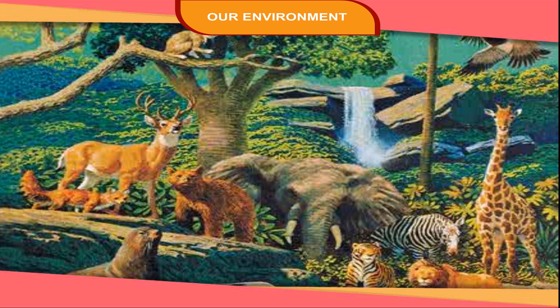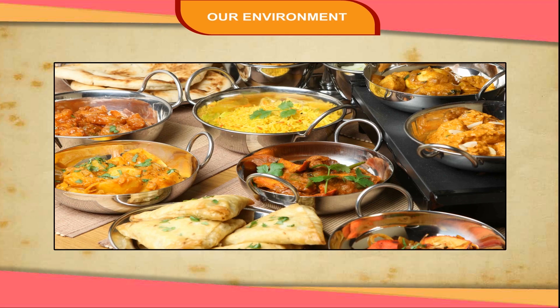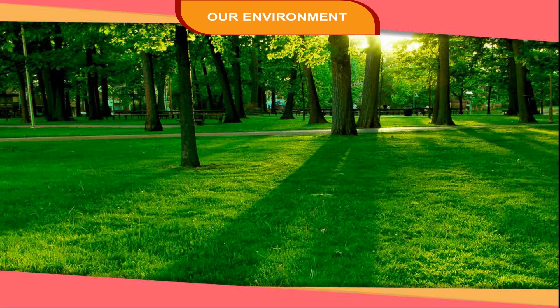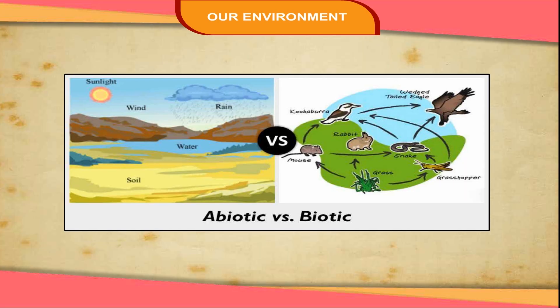Animals and plants also play an important role in our life. We cannot live in isolation from other forms of life because we depend on them for our food and other necessities of life. Thus, it is necessary to understand the processes that support our environment. Land, water, air and living organisms are the four major components of environment.